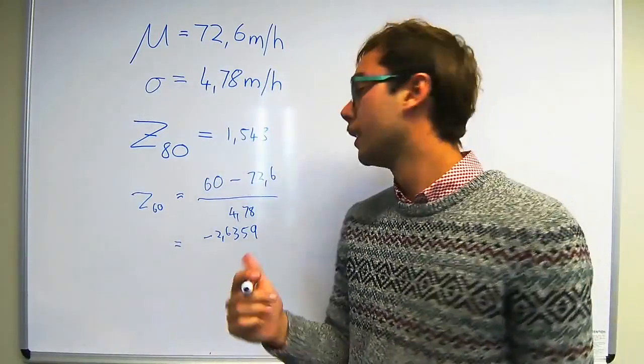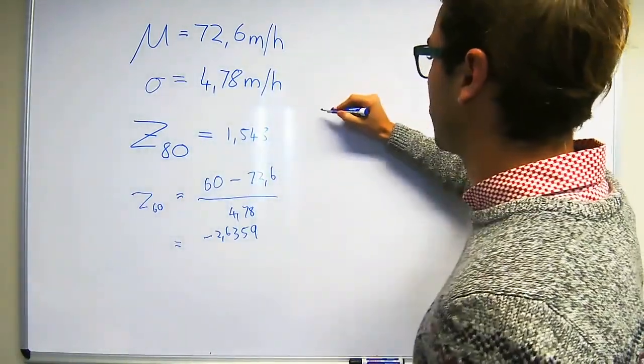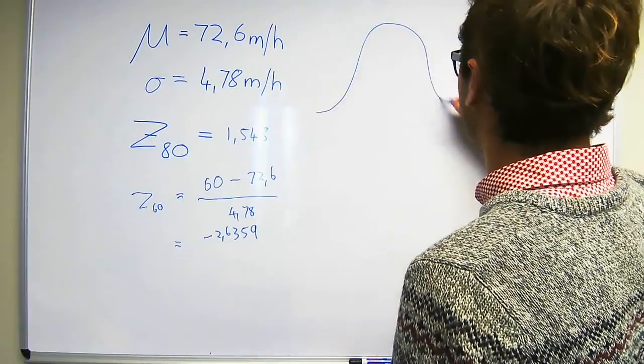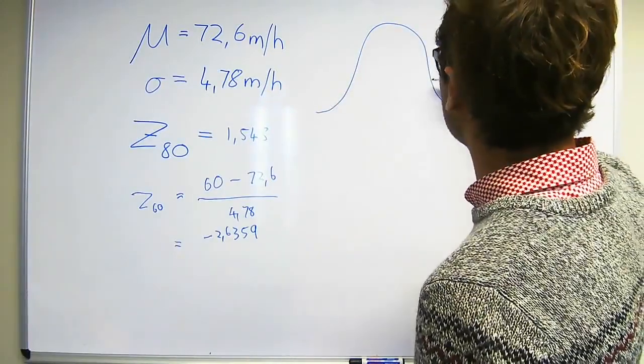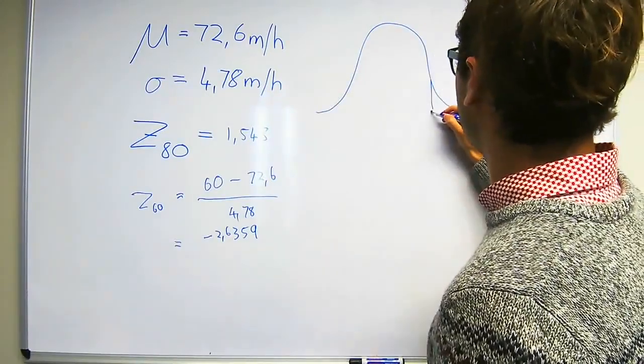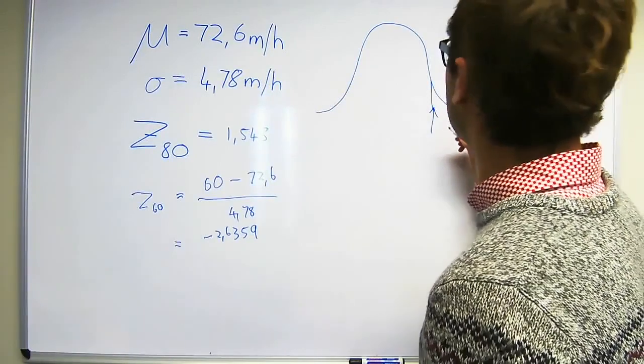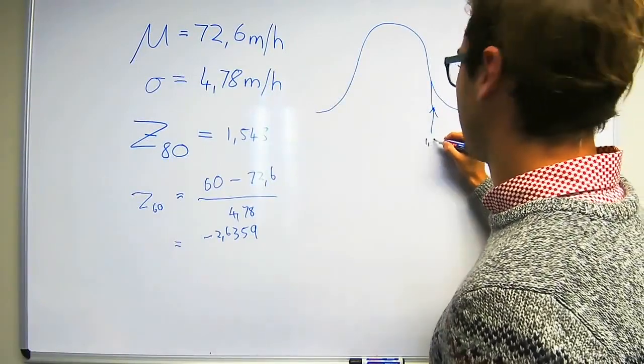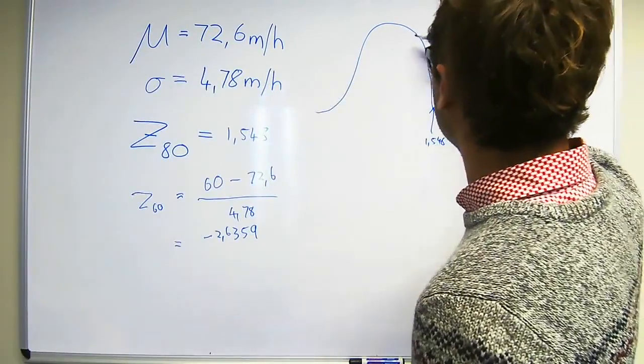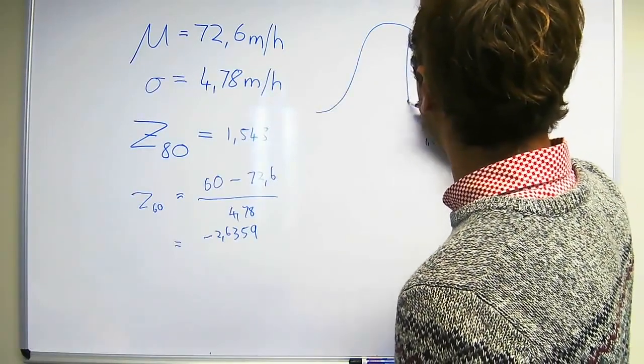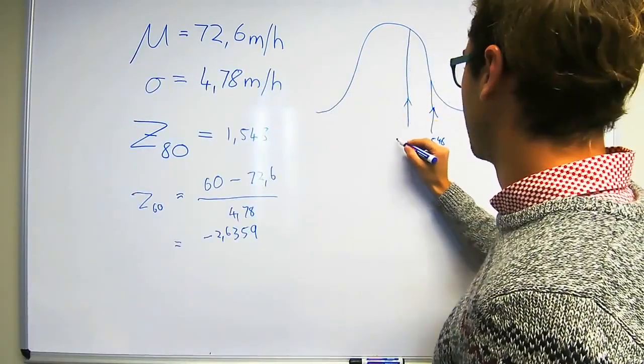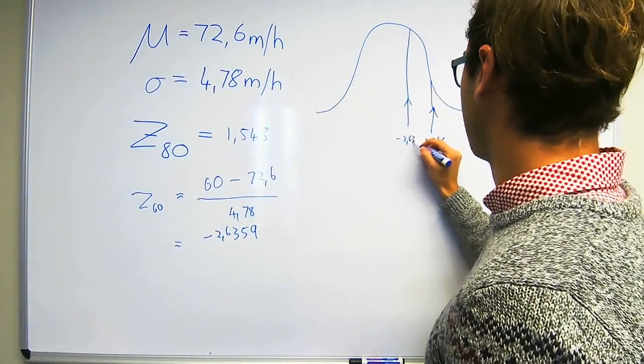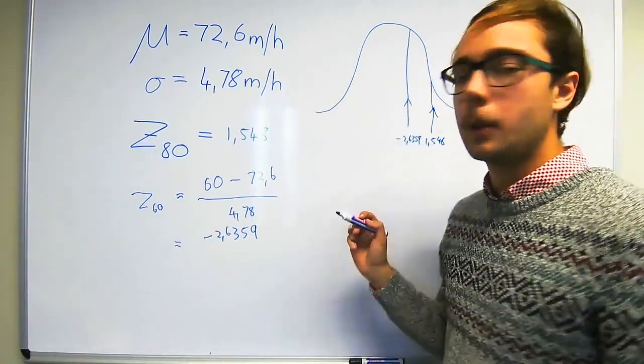We now have the two Z-values associated with these two speeds. Let's quickly draw the normal distribution to explain what we're going to try and do. If this is the value corresponding with 80 which is 1.548 and that's for 60 which is minus 2.6359.